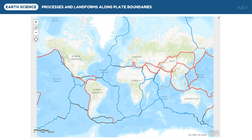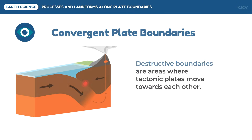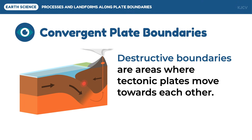We are going to discuss each plate boundary, and the first one is convergent boundaries. Convergent boundaries are areas where tectonic plates move towards each other. The main result of the movements of plates is collisions. This boundary is also called destructive boundaries because the crust gets destroyed along the process. There are three different types of convergent boundaries based on the plates involved.